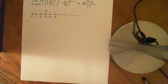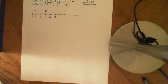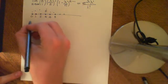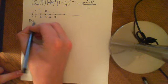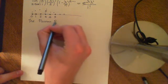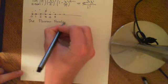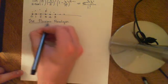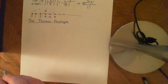Welcome to this final video on the Poisson distribution. In this video we're just going to outline the Poisson paradigm, and I'm certainly not going to include a proof of this. This is really to show how useful and how powerful the Poisson distribution is — it is fair to say that it is probably the most important distribution in all of statistics.